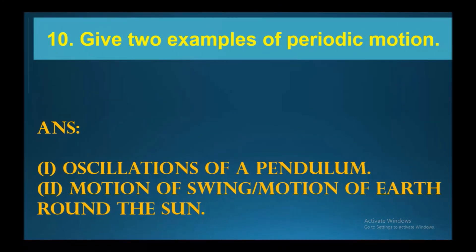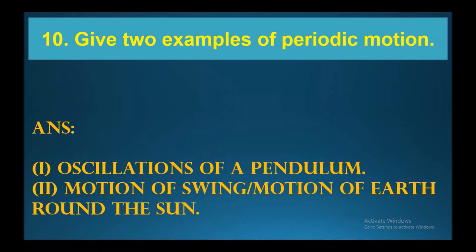The next question is: give two examples of periodic motion. Two examples of periodic motion are: oscillations of a pendulum, and motion of a swing or the motion of the Earth around the Sun.